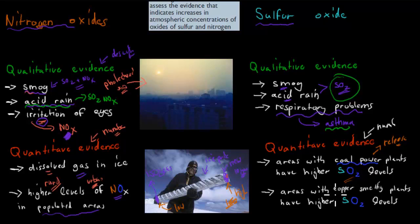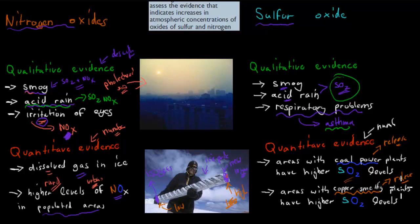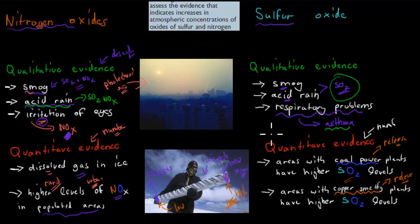Another source is copper smelting. Metal smelting generally produces sulfur dioxide as a byproduct. If you compare the area close to a copper smelting plant with a normal area, the SO₂ levels are higher near the smelter because it's released into the atmosphere. These are the numbers — we use a probe to look at the concentrations, and the results show more SO₂ being released in areas that actually emit it.